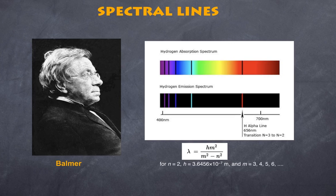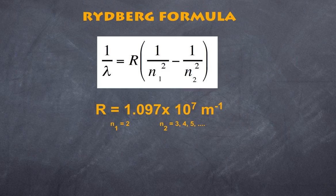That was in 1885. And a few years later, Rydberg actually modified the formula and came up with a very famous formula called the Rydberg formula. And basically, that 1 over the wavelength of the hydrogen spectrum is equal to R, where R is a constant, multiplied by 1 over n1 squared minus 1 over n2 squared. n1 is the value for 2 for hydrogen.